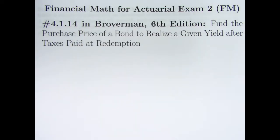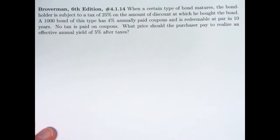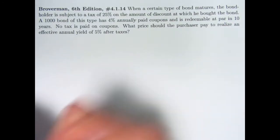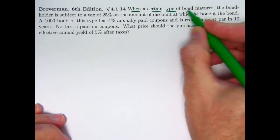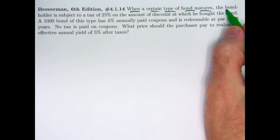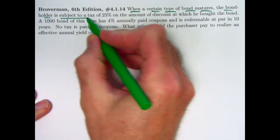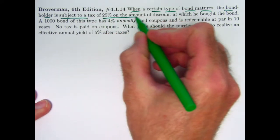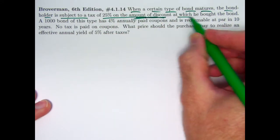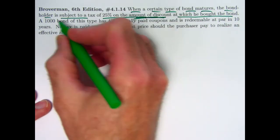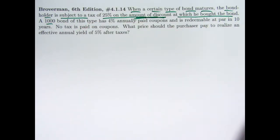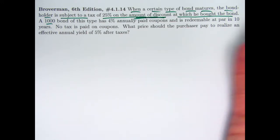In problem 4.1.14, we're finding the purchase price of a bond in order to realize a certain given yield after taxes are paid at redemption. When a certain type of bond matures — in other words, at redemption — the bondholder is subject to a tax of 25% of the amount of discount at which he bought the bond. The face value of this bond is $1,000, so evidently the bondholder is going to pay less than $1,000 for the bond at discount.